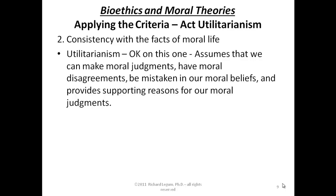Utilitarianism assumes we can make moral judgments. It also assumes that we have moral disagreements. Act Utilitarianism is the theory that what makes an action morally right or morally obligatory is the fact that it results in consequences that give the best balance of good over bad — really happiness over unhappiness, or to be precise, pleasure over pain. We judge whether things are going to have this balance of consequences, and we have disagreements about whether things are right or wrong. Sometimes these disagreements amount to disagreements about what the pleasurable and painful consequences of a particular action are.